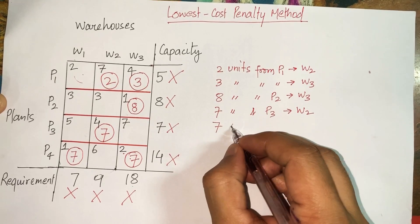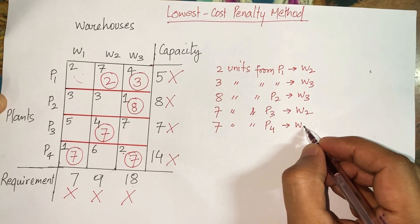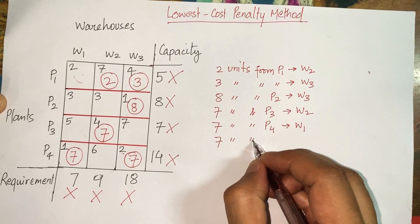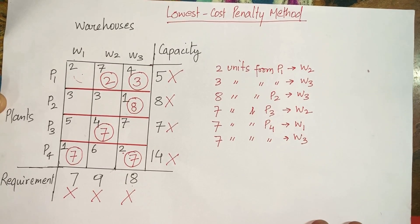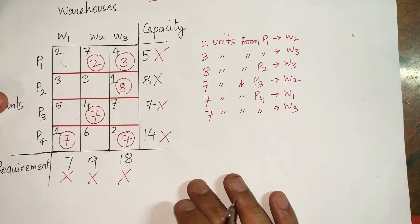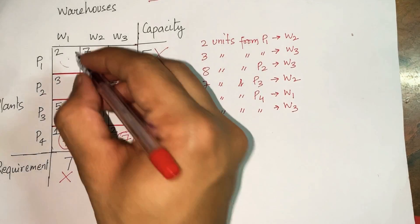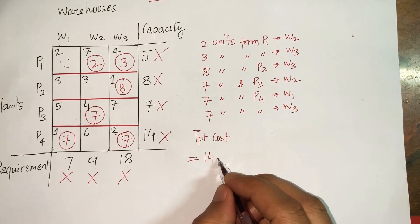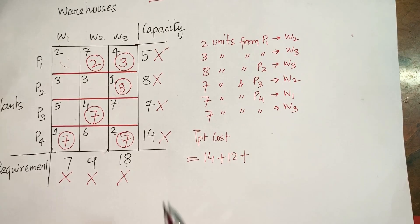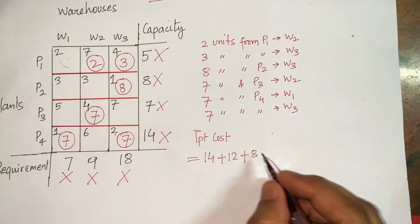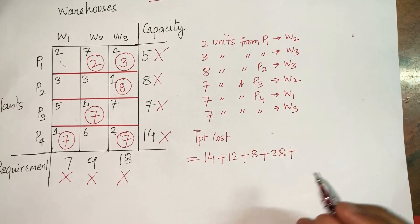The final transportation plan is: 2 units from P1 to W2, 3 units from P1 to W3, 8 units from P2 to W3, 7 units from P3 to W2, 7 units from P4 to W1, and 7 units from P4 to W3. Now let's calculate the total transportation cost: 7×2 = 14, plus 4×3 = 12, plus 1×8 = 8, plus 4×7 = 28, plus 7×1 = 7, plus 7×2 = 14.